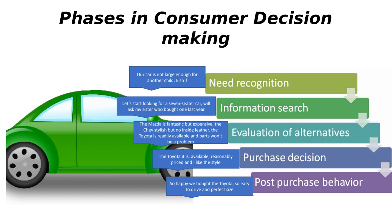The next stage is you've made your decision. You've looked at your alternatives and decided that the Toyota is the way to go — it's available, it's reasonable, you like the style and you can get it in a color you like. The final component of consumer decision making is after the purchase — what we call cognitive dissonance or post-purchase behavior. This is when you've been driving your Toyota for a few weeks and you either feel great about the purchase, or you wish you had purchased the Mazda because the Toyota is not as fuel efficient as you anticipated.